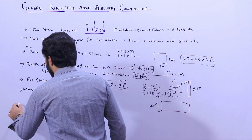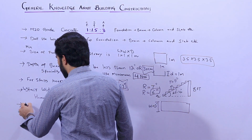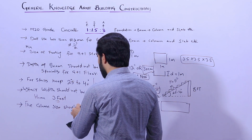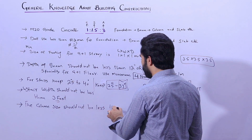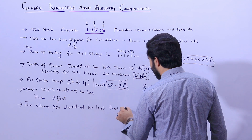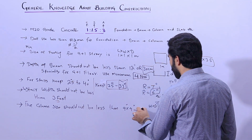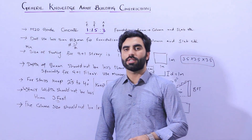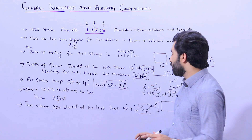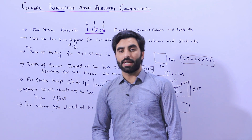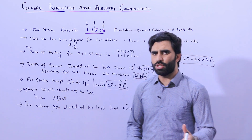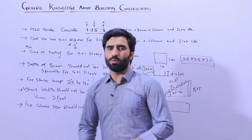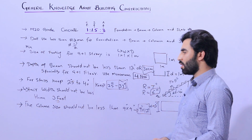The seventh point is for columns. The column size should not be less than 9 by 9 inches for G plus one story, but I recommend using 9 by 12 inches. Use a minimum of four steel rods, but you can use six — two extra bars at the middle can be 10 millimeter, while the main bars should be 12 millimeter. Since we are adding two extra bars, 10 millimeter for those is acceptable.